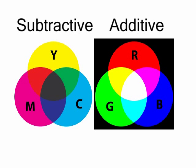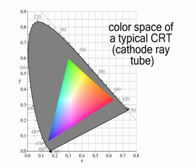It was once believed that the mixing of the three primary colors could create all of the other possible colors. We are now able to show that it is not possible to produce all of the colors visible to the normal eye through the combination of just three colors.